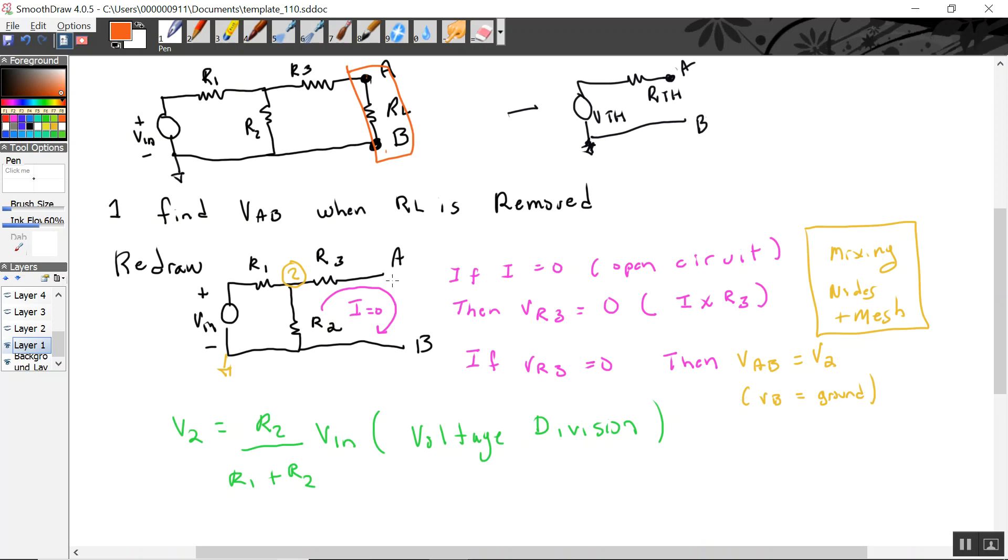And then I have to notice that, without any RL, it's an open circuit. So, if it's an open circuit, the current through this is zero. Well, if the current through this is zero, there's no voltage drop between node 2 and node B. That means they're equal. So, then really, all we have to do is find the voltage division between these two resistors. And so, V2 equals the voltage division of R2 divided by the sum of the resistances.